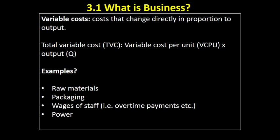Moving on to costs. There are two different types of costs you need to know at this stage. The first is variable costs, sometimes called total variable costs. When defining variable costs, it's really important to include this key element: variable costs are costs that change directly in proportion to output. A common exam mistake is to define variable costs simply as 'costs that change' — that's far too vague. We need to be more precise: variable costs are costs that change directly in proportion to output.